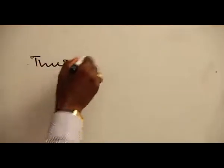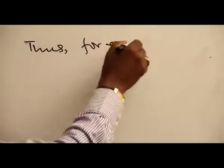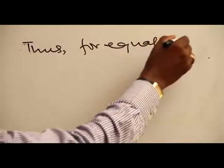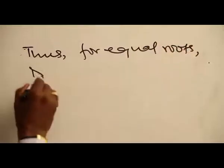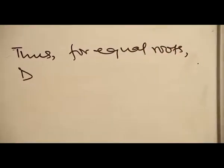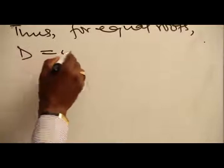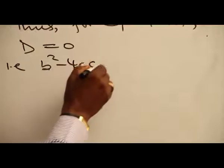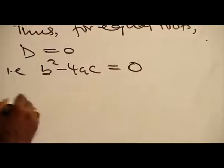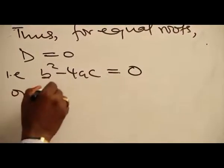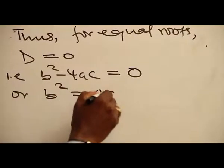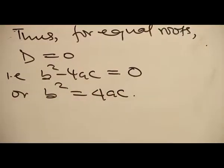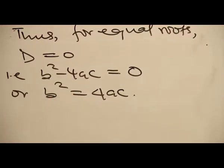Thus, for equal roots, the discriminant D will be equal to zero. That is, B squared minus 4AC is equal to zero, or B squared is equal to 4AC. This gives you the equal roots.